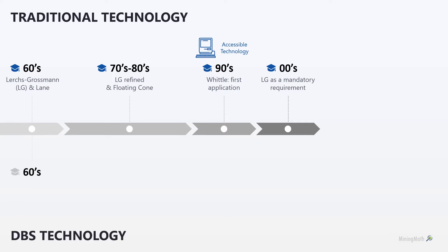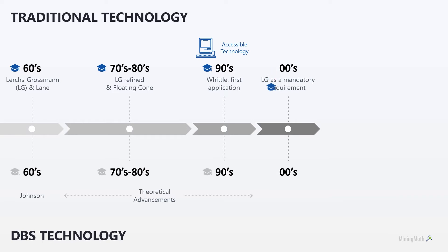The direct-block scheduling technology also started in the 60s with Johnson. During the following three decades, most of the advancements that were made were theoretical due to the technological limitations of that time. In the 2000s, 64-bit technology came along, which allowed people to deal with real mining operations. Then the Academy switched its focus to the DBS approach.